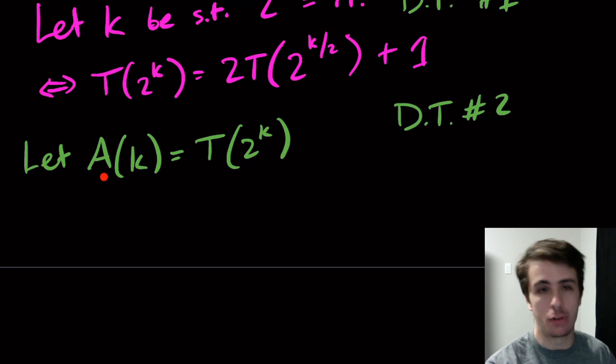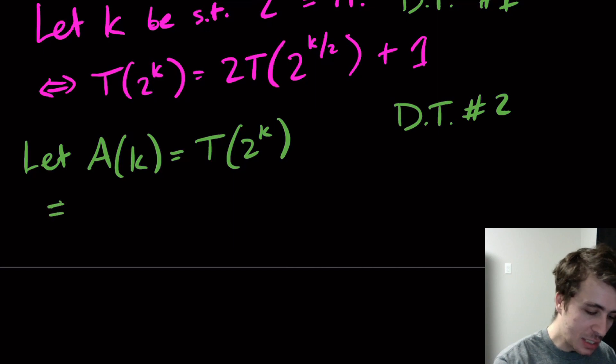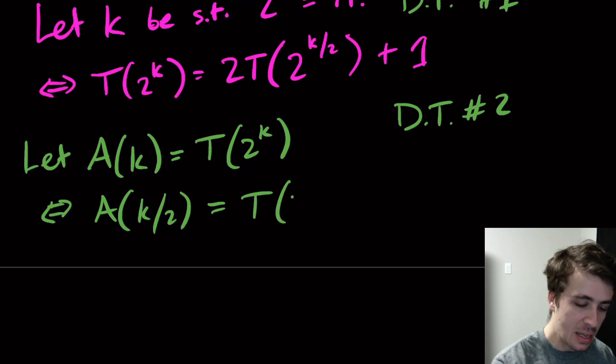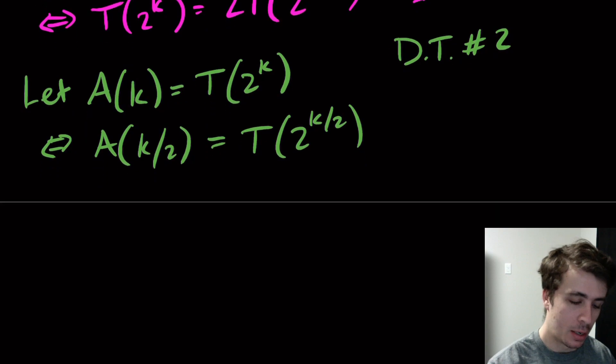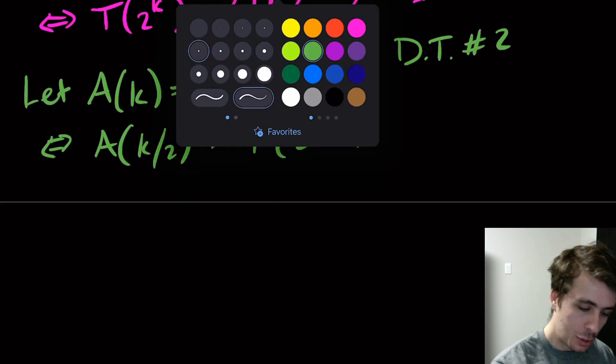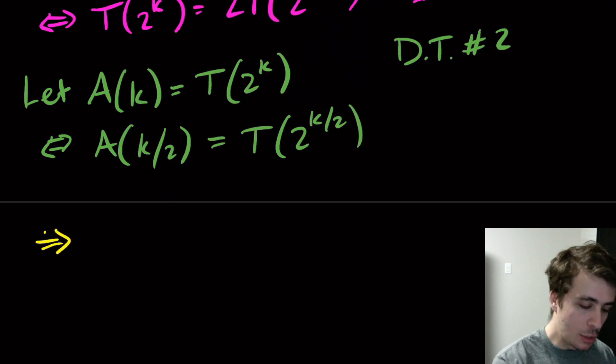We can easily see that A(k/2) is the same thing as T(2^(k/2)) because the parameter here is just what's in the exponent of the 2 power right here. So k/2 is what's in the exponent here.